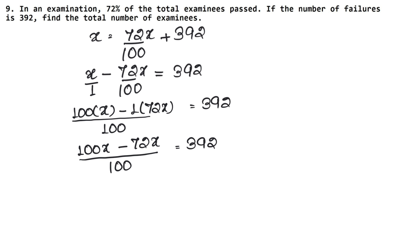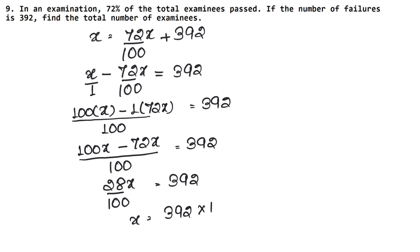100 minus 72 gives 28, so 28X / 100 = 392. Therefore X = (392 × 100) / 28. Cancelling: 392 ÷ 28 = 14, and 14 × 100 = 1400. So the value of X is 1400.